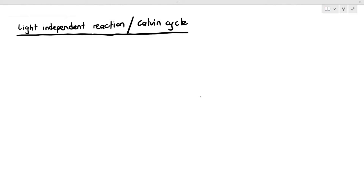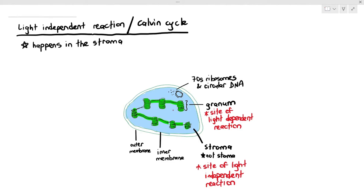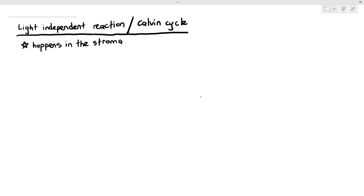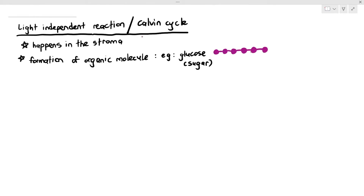The light-independent reaction or Calvin cycle takes place in the stroma of the chloroplast — the space highlighted in blue in the diagram. The purpose of the light-independent reaction is the formation of organic molecules such as glucose, but the Calvin cycle can also form fructose, amino acids, phospholipids, and fatty acids.